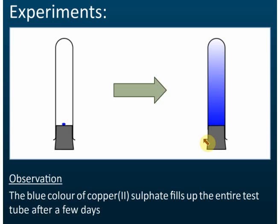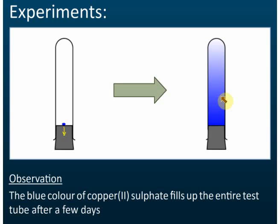If we have gravitational pull, then the blue color should go down — it shouldn't spread outward. But in fact the blue color spreads to the whole gel. This happens because of diffusion. So how does this occur?